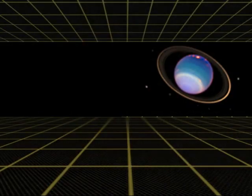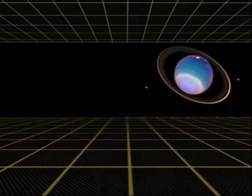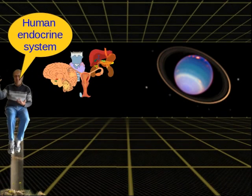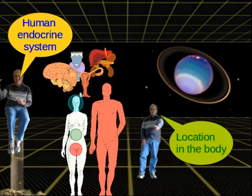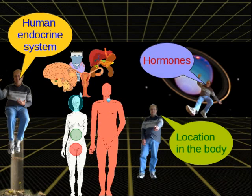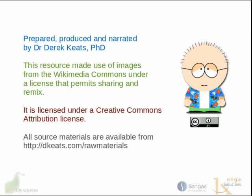And that's the basis of the endocrine system. We have introduced the human endocrine system, explored the location of the components of the endocrine system within the body, and introduced the concept of hormones. In the next section, we will look in more detail at hormones and some examples of how the endocrine system functions. I'm Derek Keats, and this resource is licensed under a Creative Commons Attribution License.